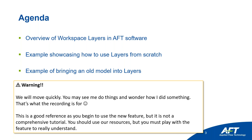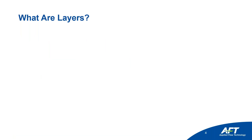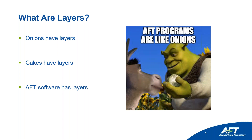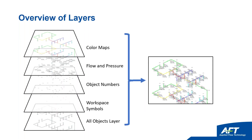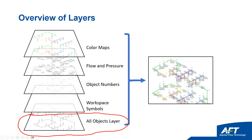By the way, you don't have this feature yet for those watching live, but it is coming out soon. So what are layers? Onions have layers, cakes have layers, AFT software has layers. The idea is that our software is like setting a set of transparencies on top of one another — very much like layers in other software such as Microsoft PowerPoint.